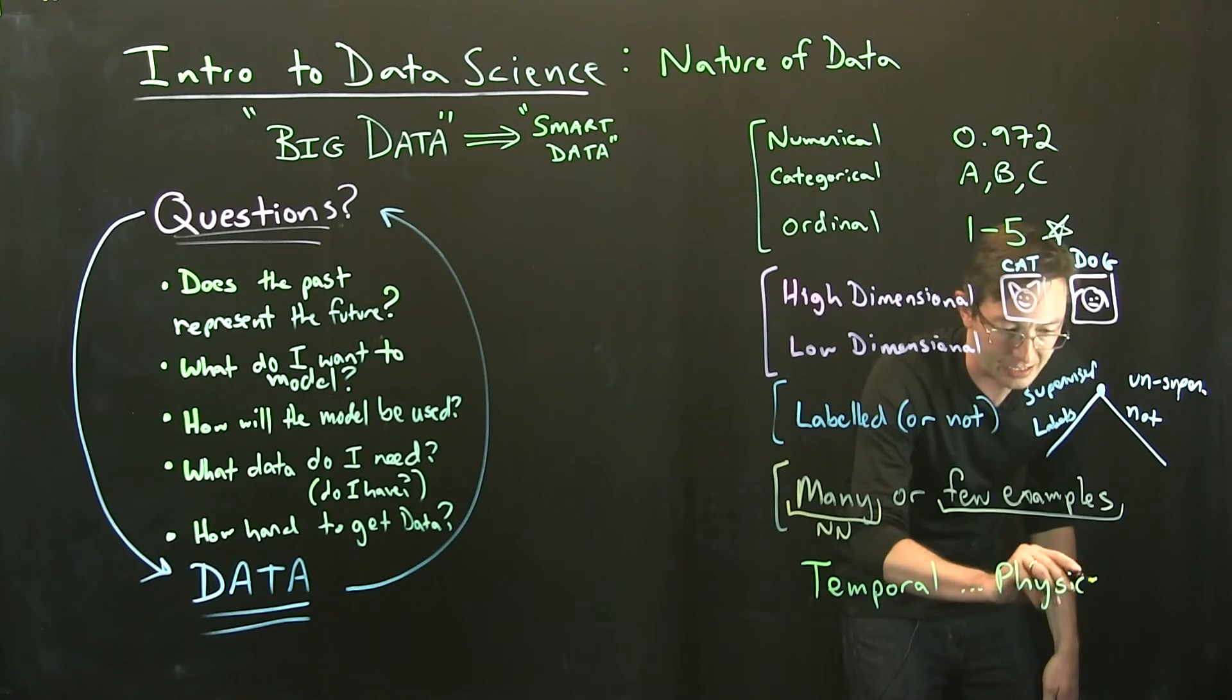Another distinction, and I think of this a lot because I work with physical systems where we know Newton's laws exist and are true, is whether your data is temporal in nature, or if there's some physics or dynamics that describe your data. Are my many examples correlated in time or are they discrete examples like picture of cat, picture of dog? Is it a movie or just a sequence of random images?